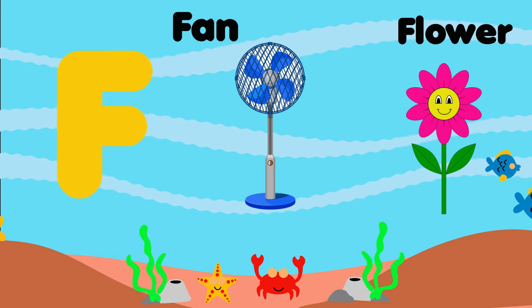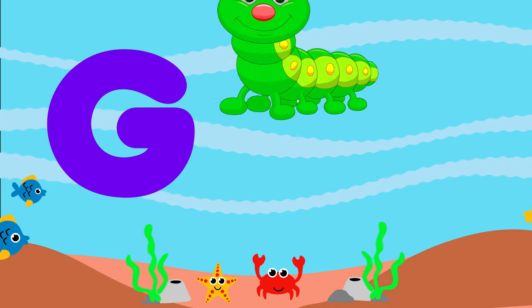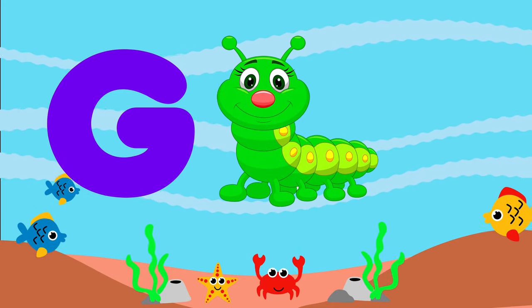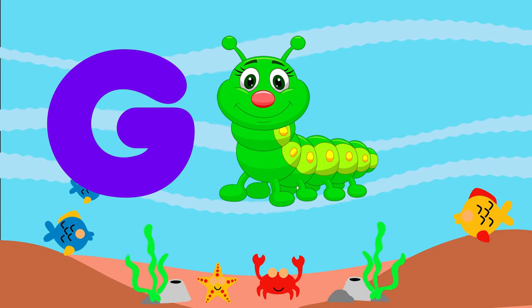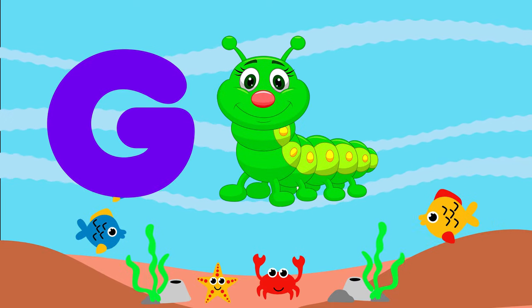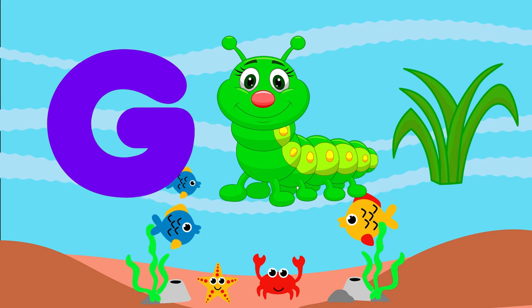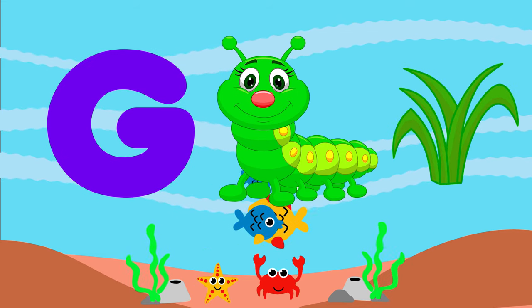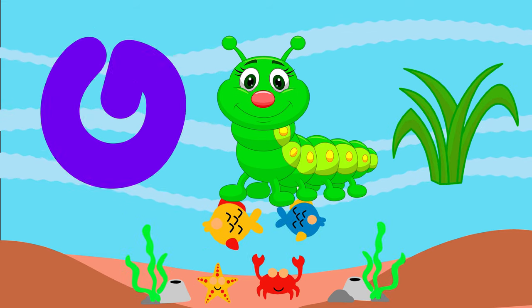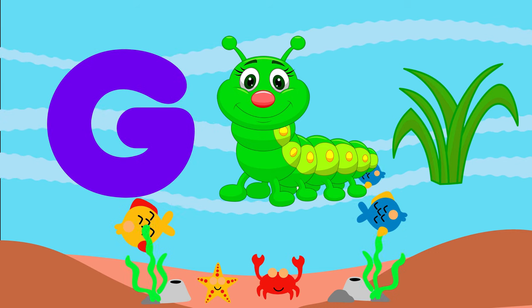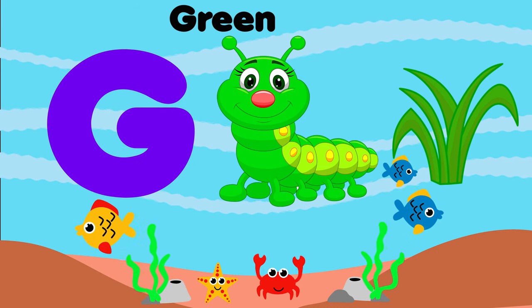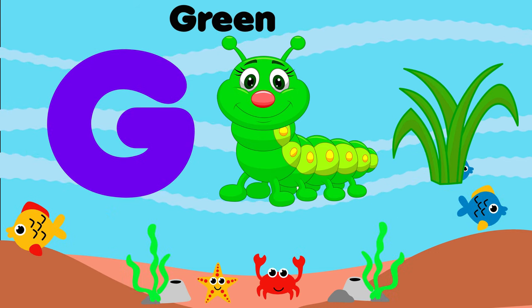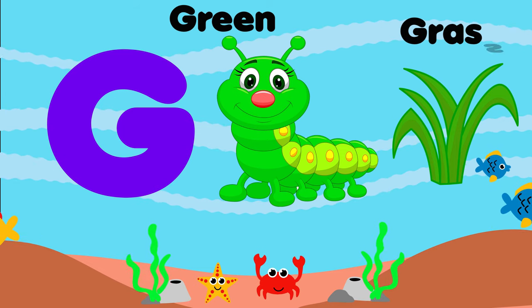G is for green. G, g, green. G is for grass. G, g, grass. G is for g-g-g-green. G is for g-g-g-grass.